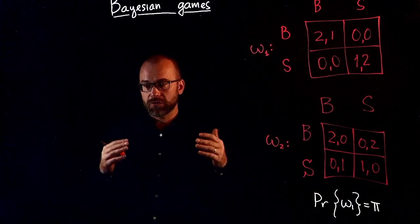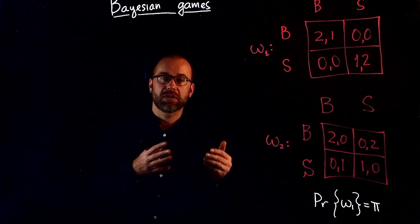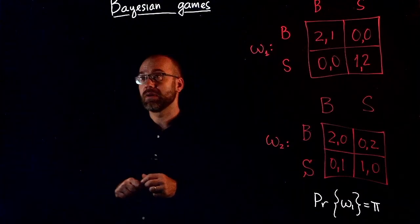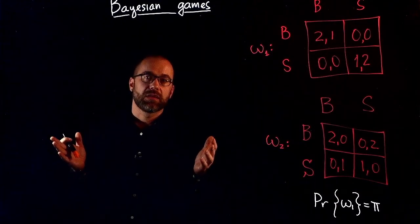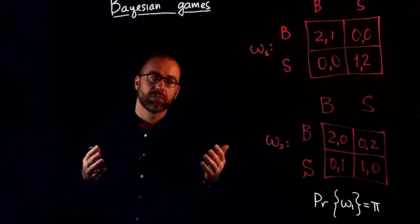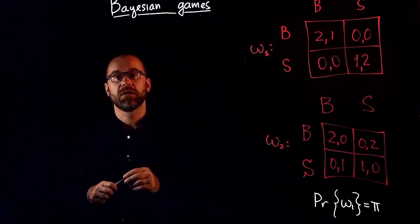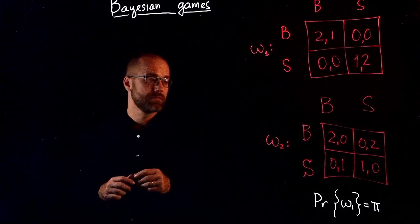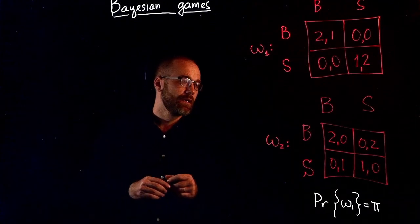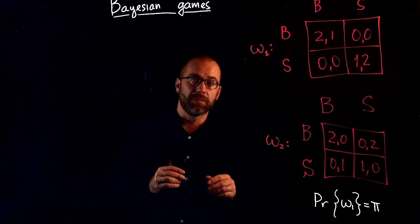We're going to introduce asymmetric information in both static and dynamic games, and we're going to start with static games because those are simpler. Static games with incomplete information, or with asymmetric information about the players' preferences, are called Bayesian games. It will become clear why they are called that when I come to the solution for these games. But for now, let's start with a simple example.